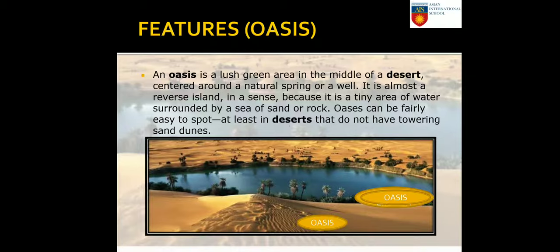An oasis is a lush green area in the middle of the desert, centered around a natural spring or a well. It is almost like a reverse island — a tiny area of water surrounded by a sea of sand or rock. Oases can be fairly easy to spot, at least in deserts that do not have towering sand dunes.